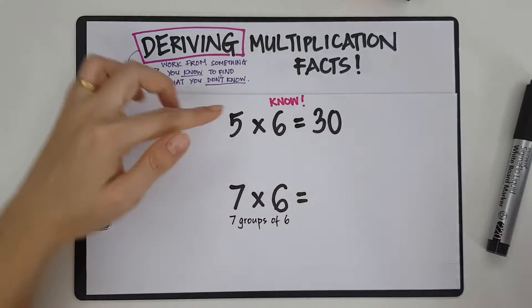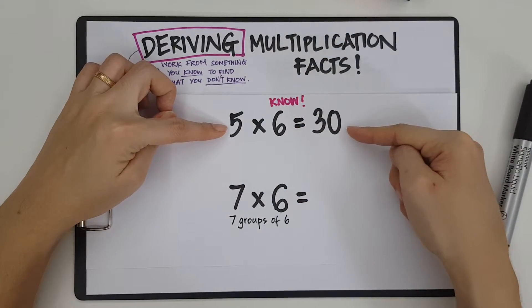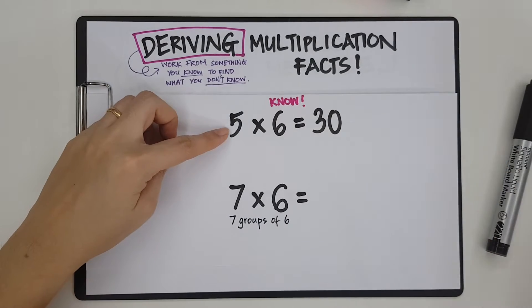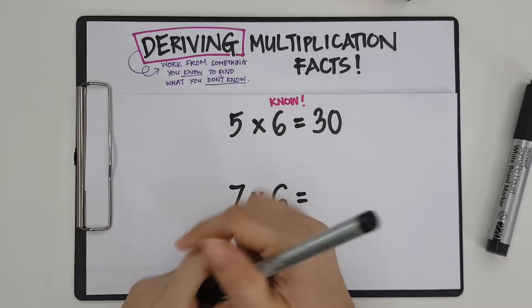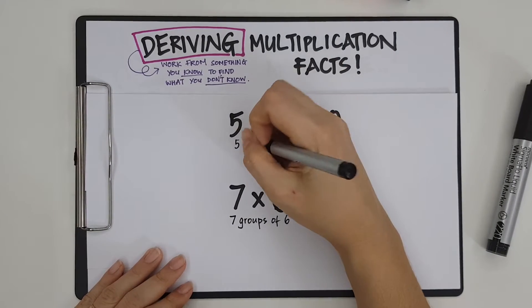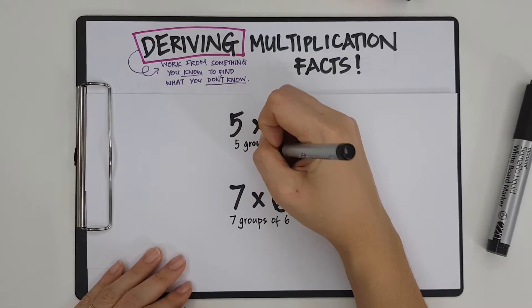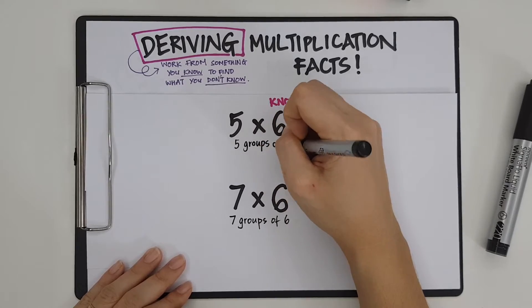And now, how do I work from 5 times 6, which I know, to get 7 times 6? Now, 5 times 6, you see 7 groups of 6 and this is still 6. So this is what I'm going to read it as 5 groups of 6.